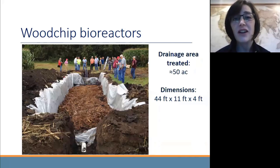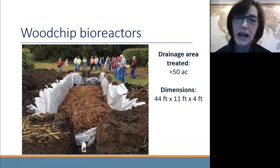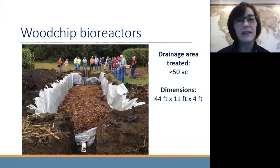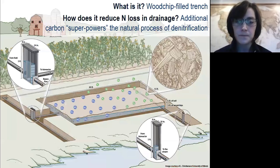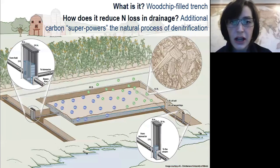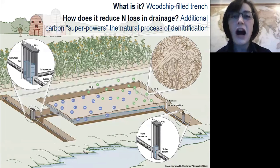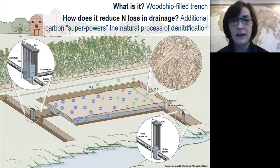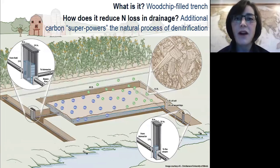What happens inside the trench is that there are natural denitrifying bacteria that live on the wood chips and use the carbon as their fuel source. As the nitrate in the drainage water flows by them, they convert the nitrate in the water to dinitrogen gas. This is the natural process of denitrification. By adding extra wood chips, we're simply super-powering or enhancing this process in these little mini water treatment plants. It's the bacteria that are cleaning the water — and because it's a biological process, that's how we came up with the name bioreactor.